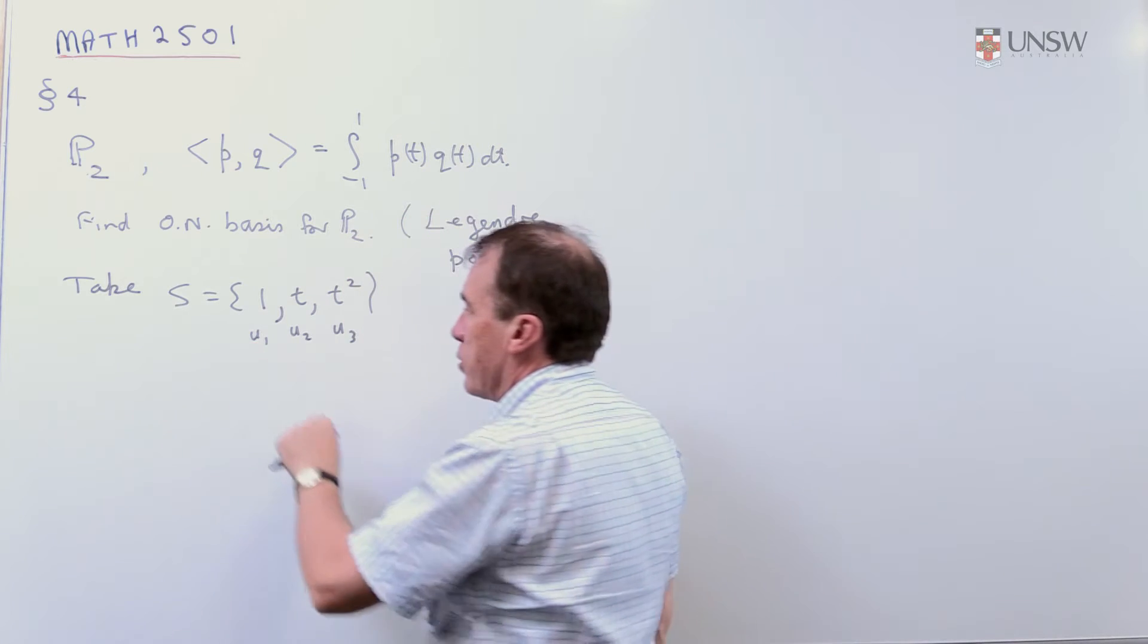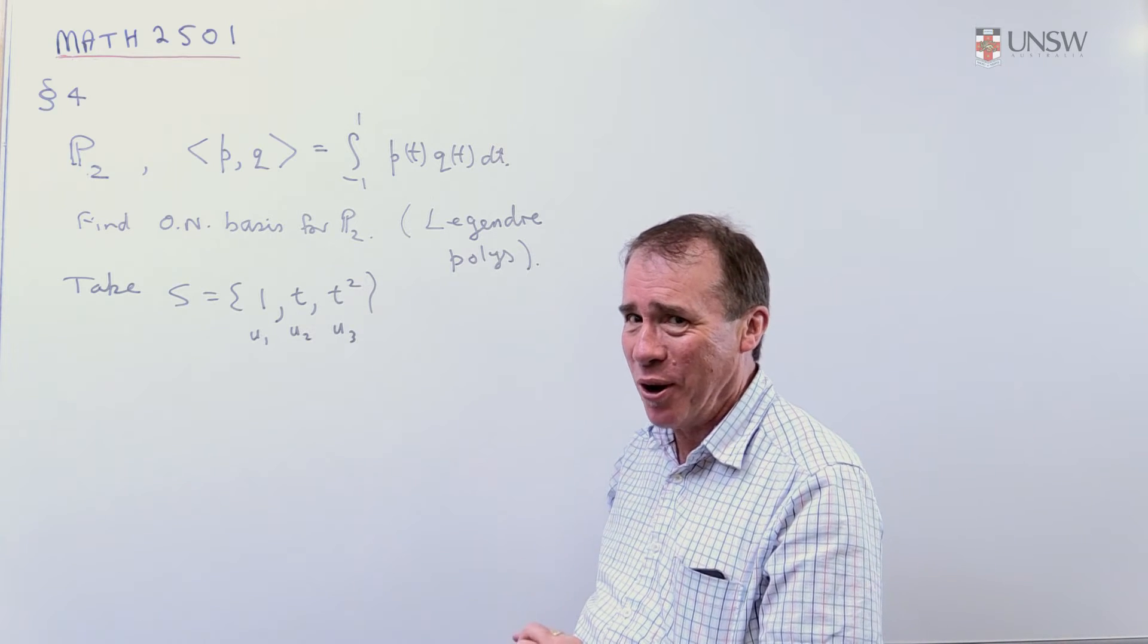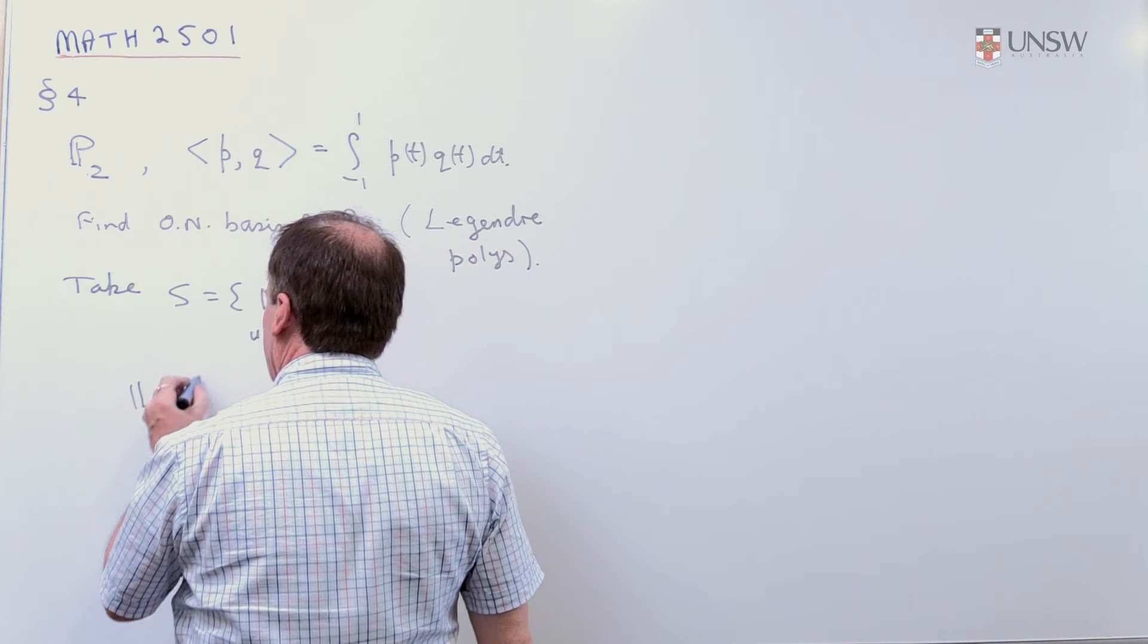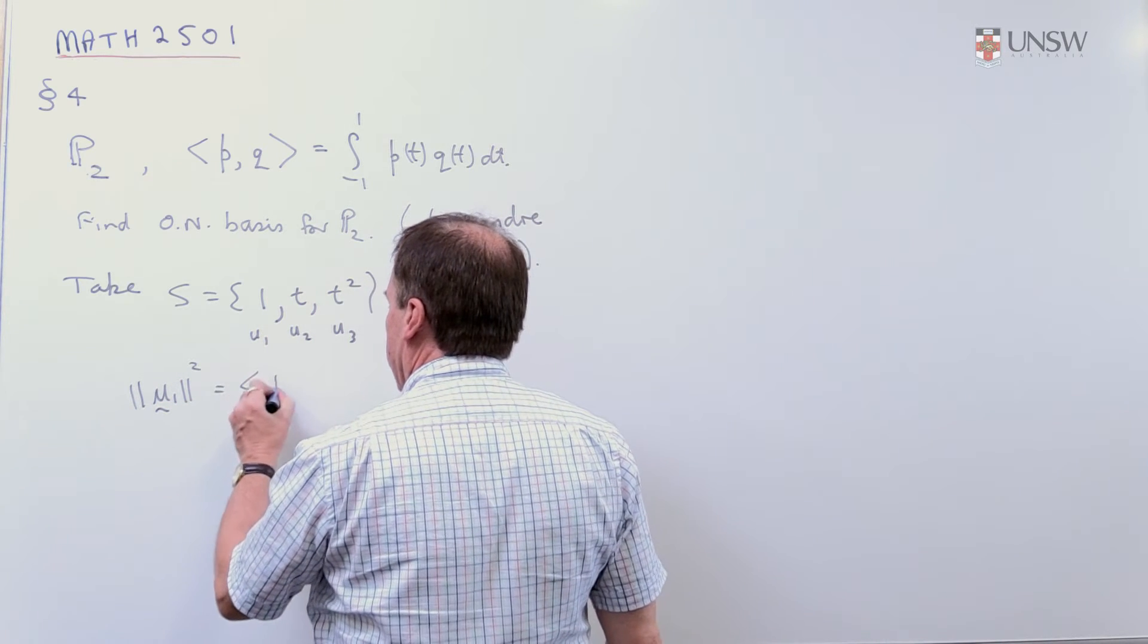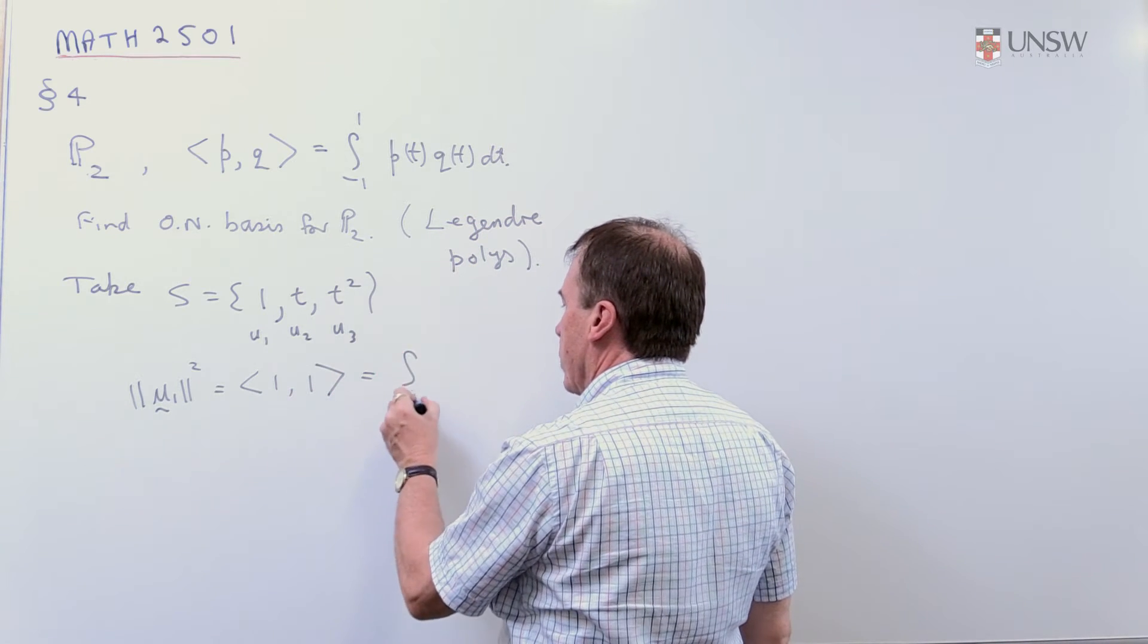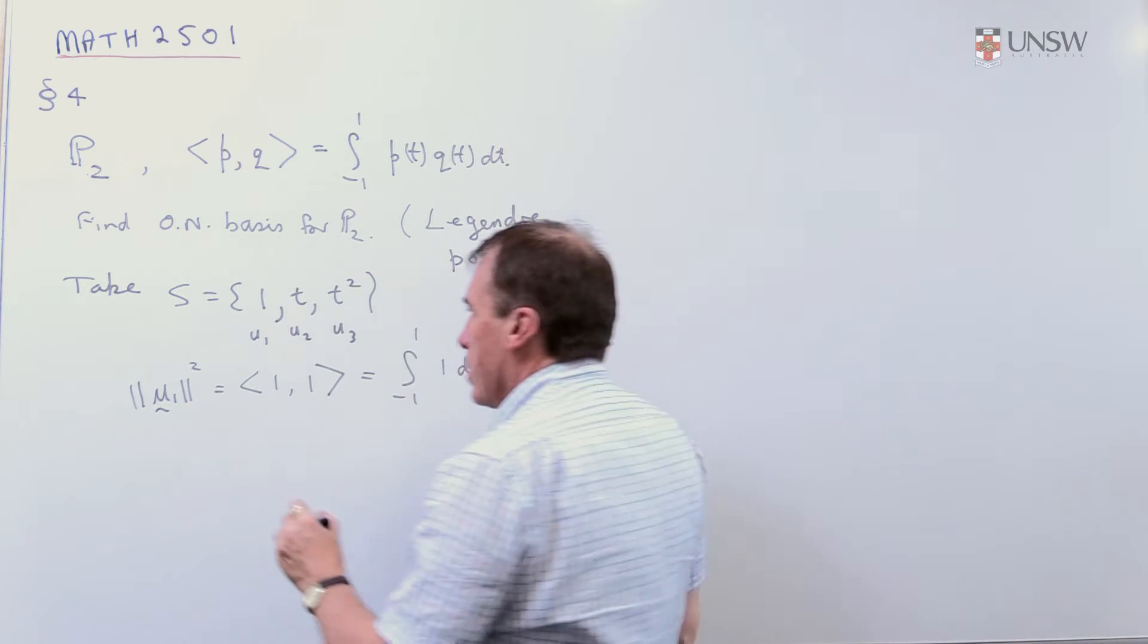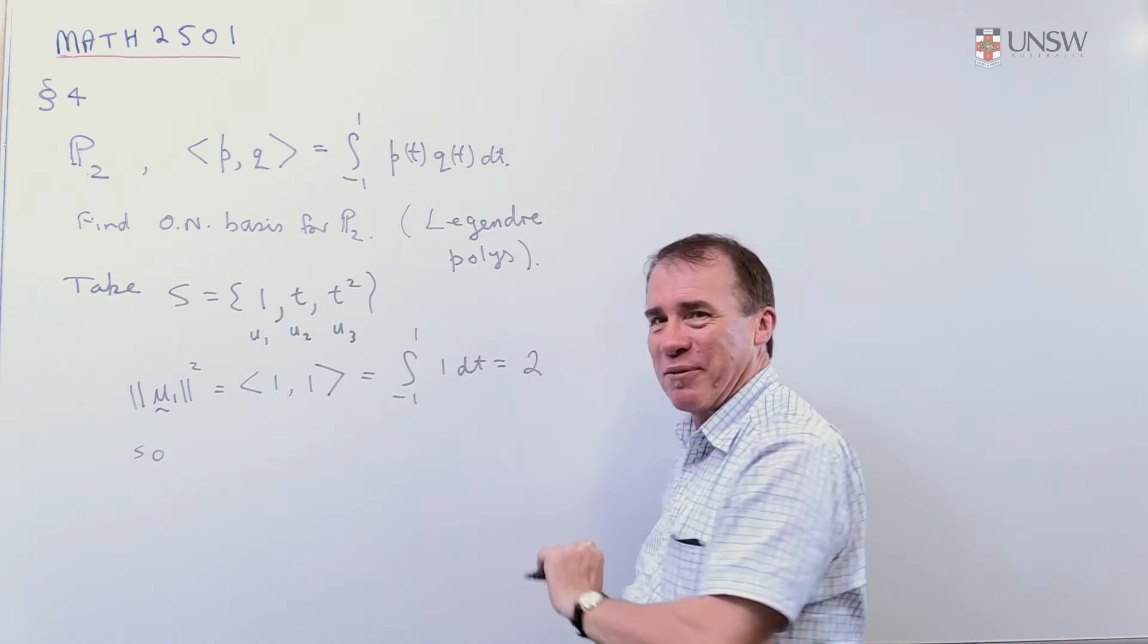The first thing I want to work out, I'm going to turn this one into a unit vector. You might think 1 looks like a unit vector, but actually in this space it's not, not with respect to this inner product. So I need to get the length of the vector U1. And I'll look at the square of that. So the square of that is the inner product of it and itself. And that means I'm integrating between minus 1 and 1. 1 times 1 is 1 dt. And that turns out, of course, that's easy integral to be 2.